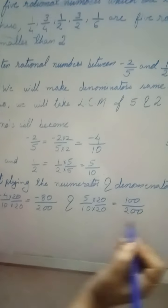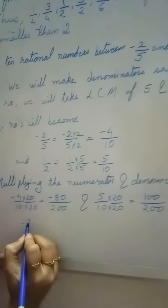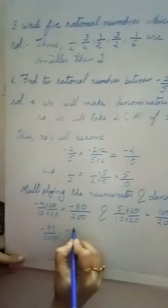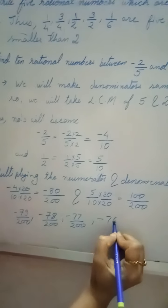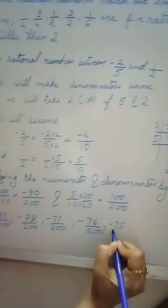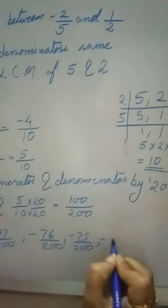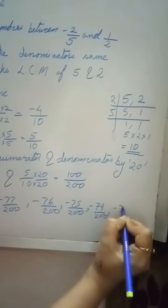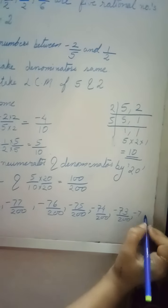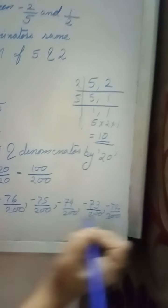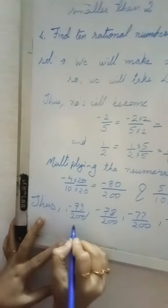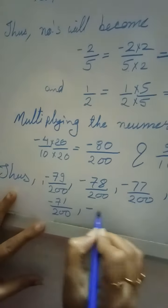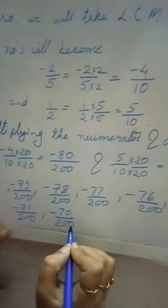So it is -80/200 and 100/200. Now we can start listing: -79/200, -78/200, -77/200, -76/200, -75/200, -74/200, -72/200, -71/200, -70/200. Now 10 numbers are complete.